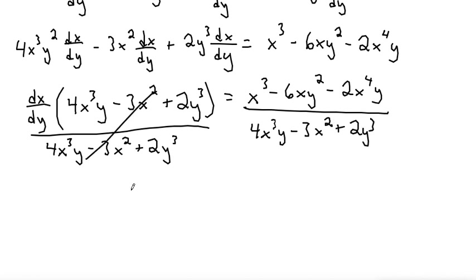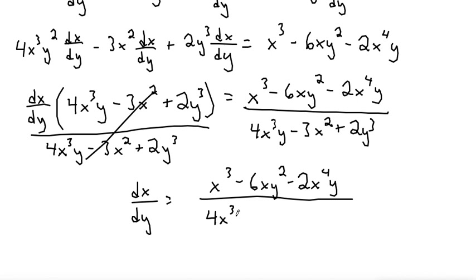So that cancels out and it gives us dx/dy equals X cubed minus 6XY squared minus 2X to the fourth Y over 4X cubed Y minus 3X squared plus 2Y cubed.